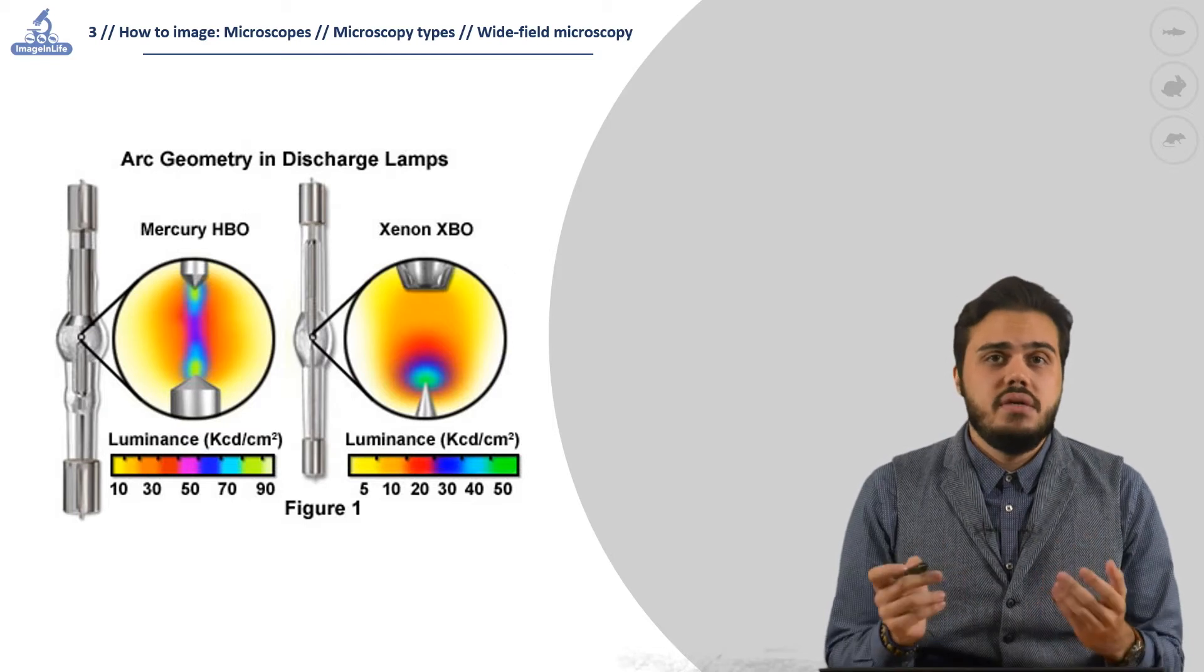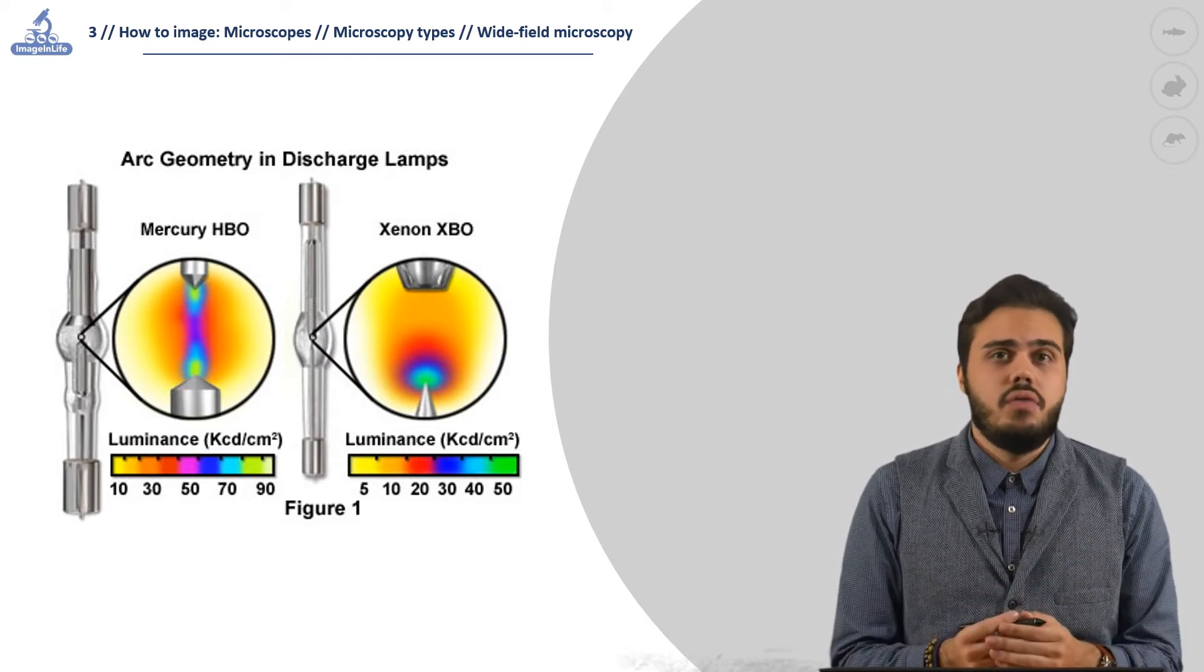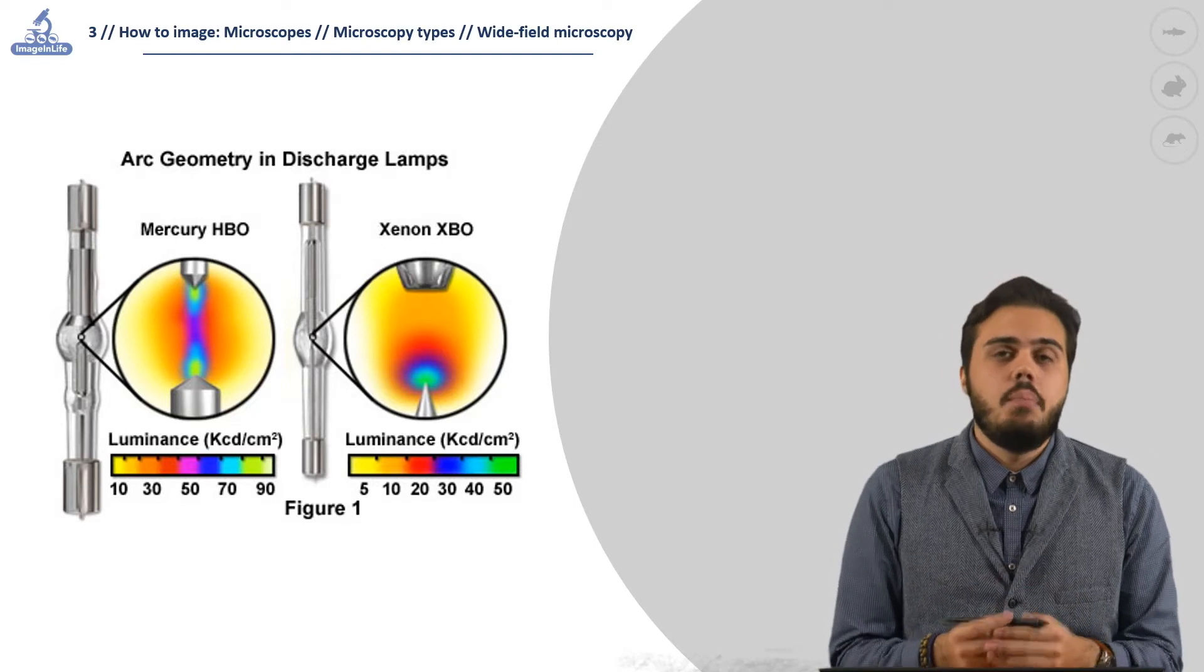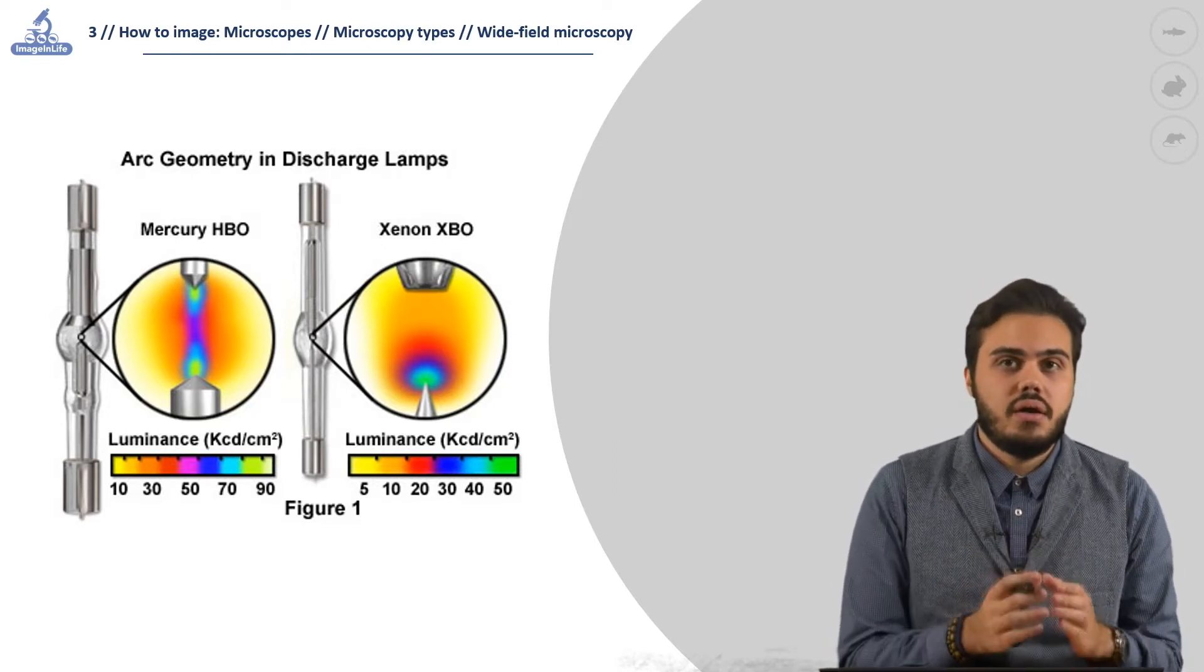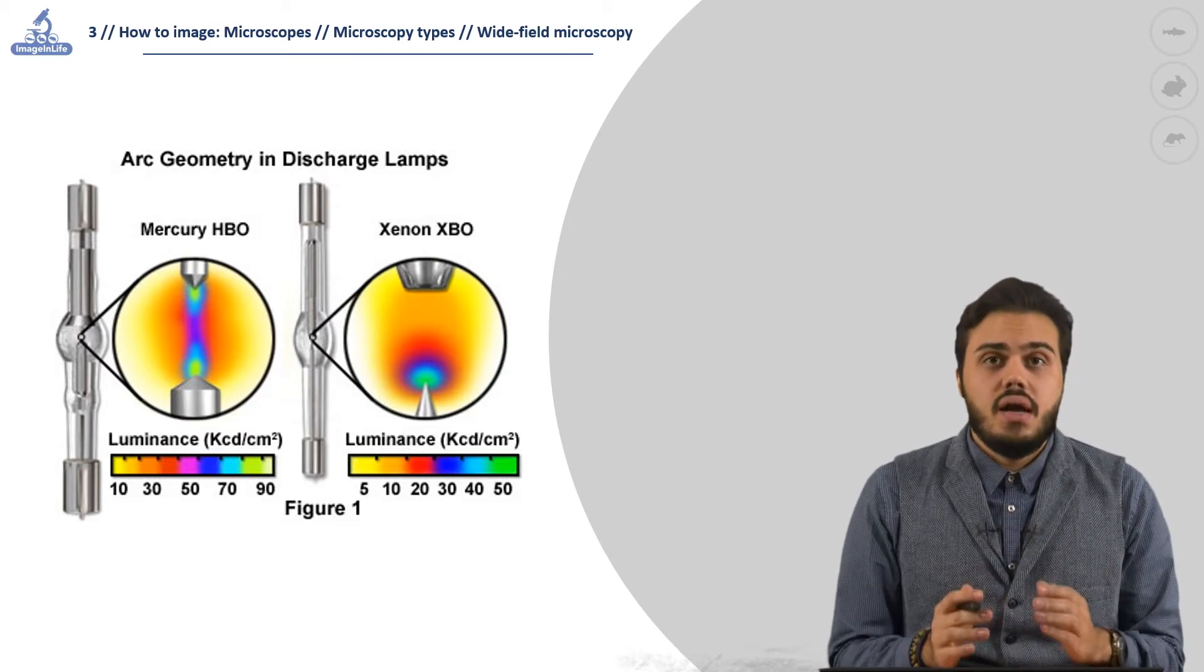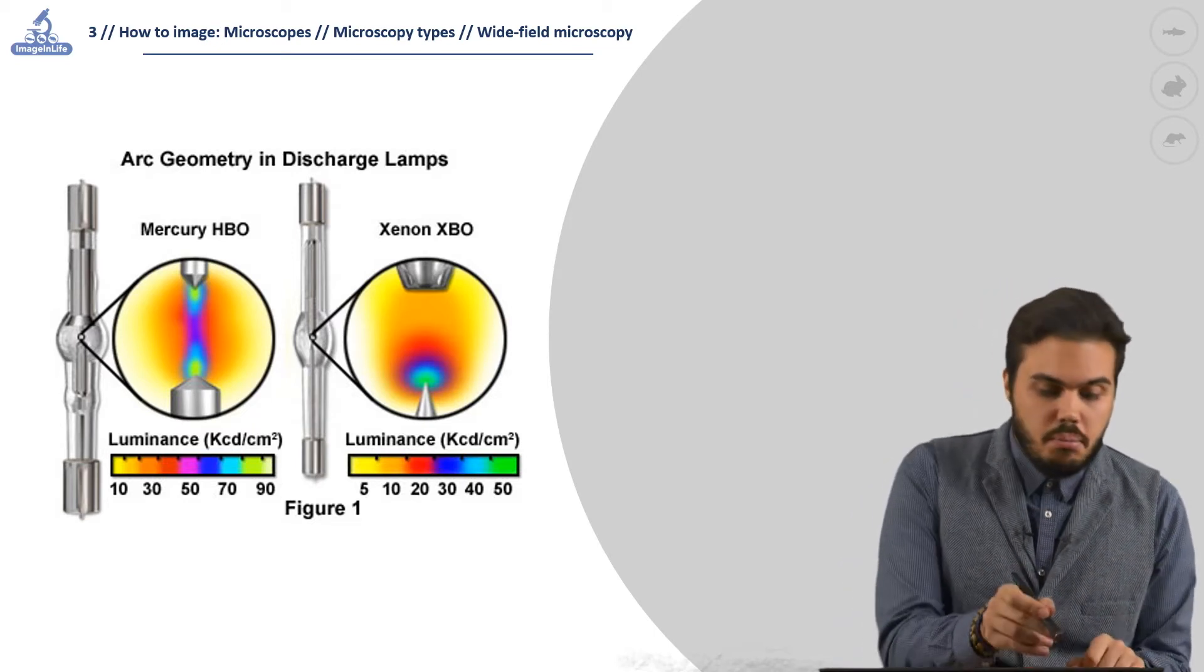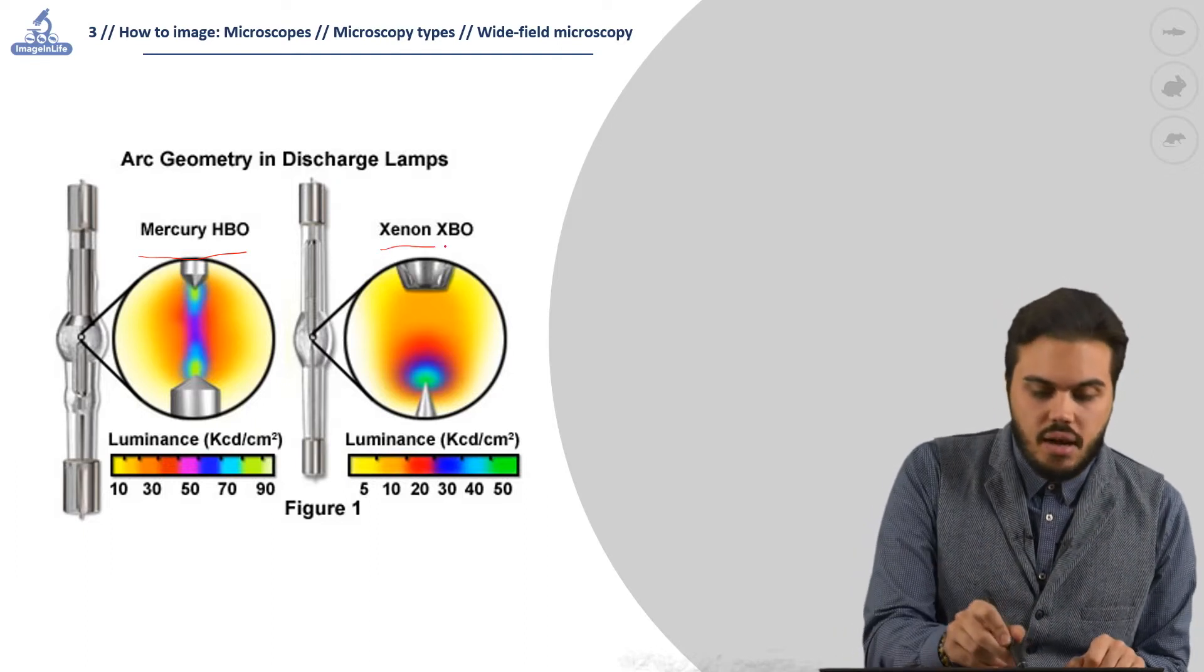The most basic yet relevant component of the wide-field is the lamp itself. Before the introduction of LED lamps, the most used ones were the arc lamps. The arc lamps are mainly divided into mercury lamps and xenon lamps.